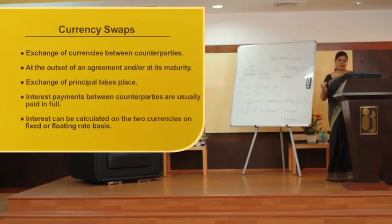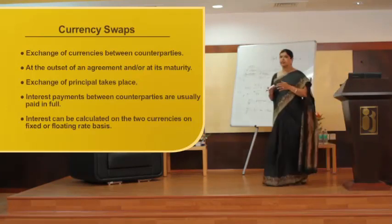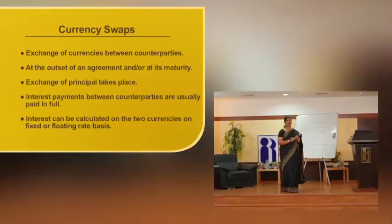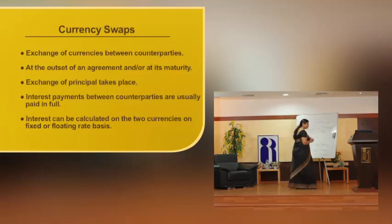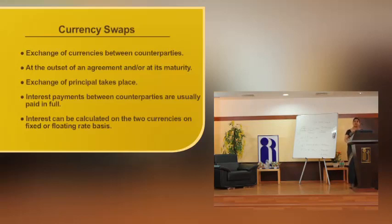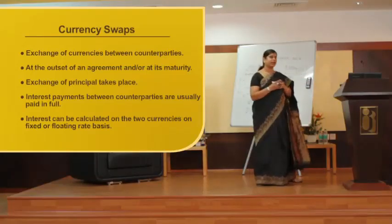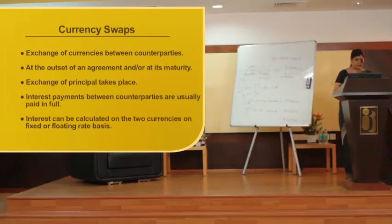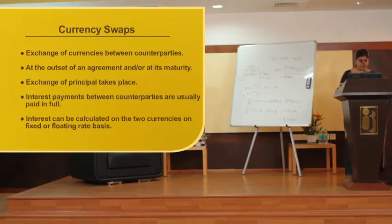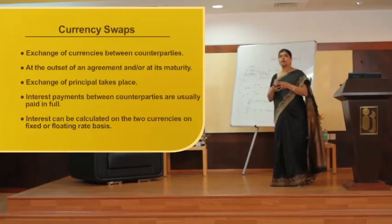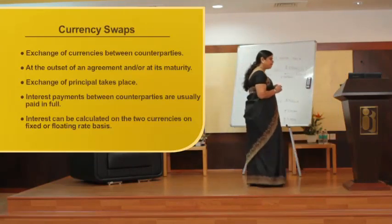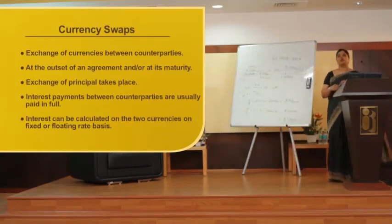Currency swaps combine foreign exchange rates and interest rate swaps. Derivatives play a very vital role in bank treasuries today. RBI has permitted use of derivatives including interest rate swaps in Indian markets for Indian companies. The benchmark used for interest rate swaps is LIBOR, and the GSEC is the benchmark for rupee borrowings. The 91-day treasury bill is also taken as a benchmark for interest rate swaps in India. This concludes the session on derivative products.